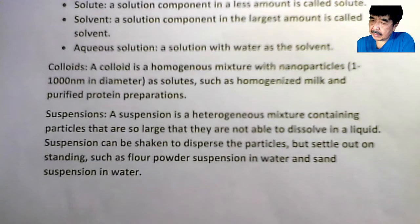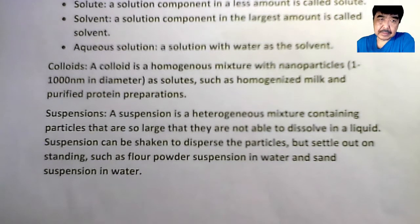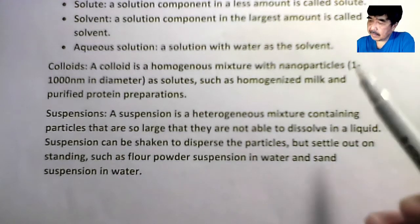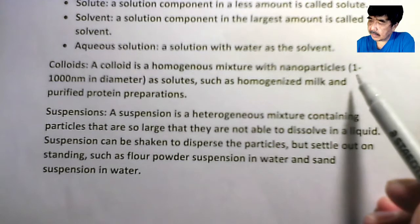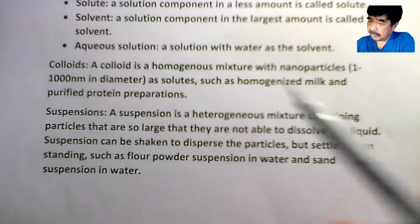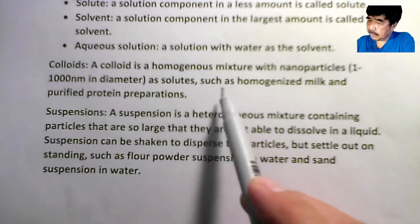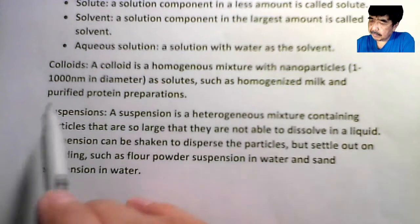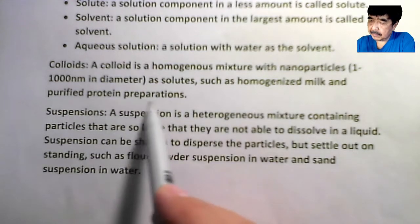Let's take a look at colloids. Colloids is a homogeneous mixture with nanoparticles as a solute. Nanoparticles are the particles that are one to 1,000 nanometers in diameter. Examples include homogenized milk and purified protein preparations.